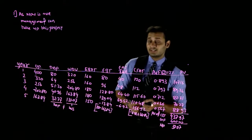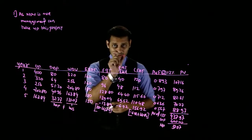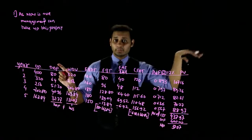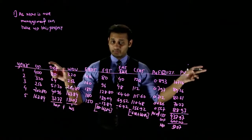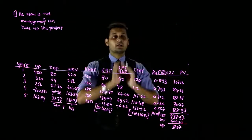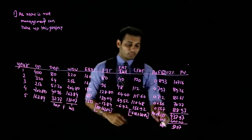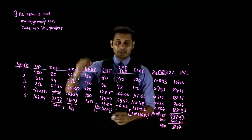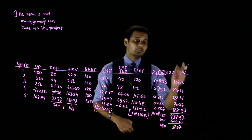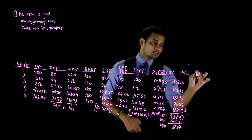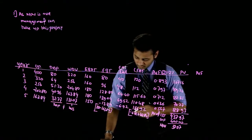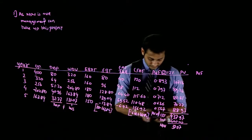Now we need to calculate the IRR. For IRR, we need NPV = 0. We already have one rate (12%) where NPV is positive (+37.97). We need another rate where NPV is negative. Between these two rates, the IRR will lie where NPV = 0. To bring NPV down from +37.97, we need to increase the discount rate. Let's try 18%.